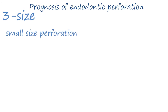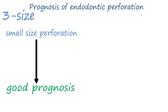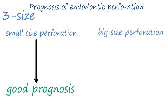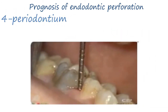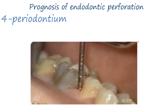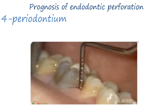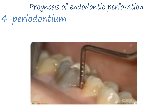Regarding size: small perforation means easy application of repair material with better control on seal, giving a good prognosis. Large perforation means difficult application with low control on seal, giving a poor prognosis. Preoperative depth of probing: positive periodontic probing results in higher risk of recurrence than in cases with negative probing.